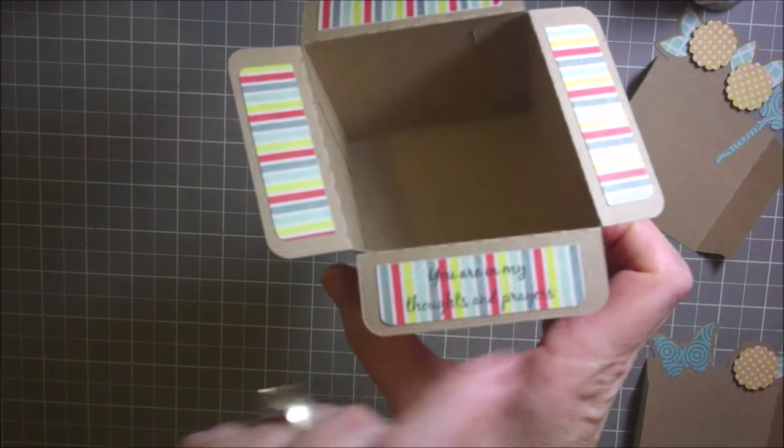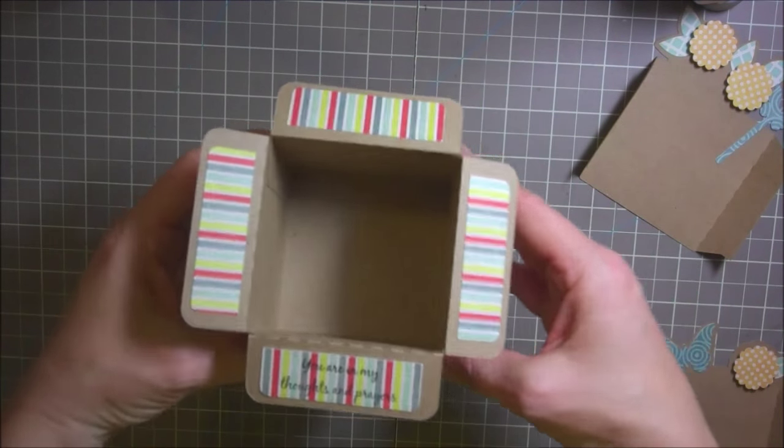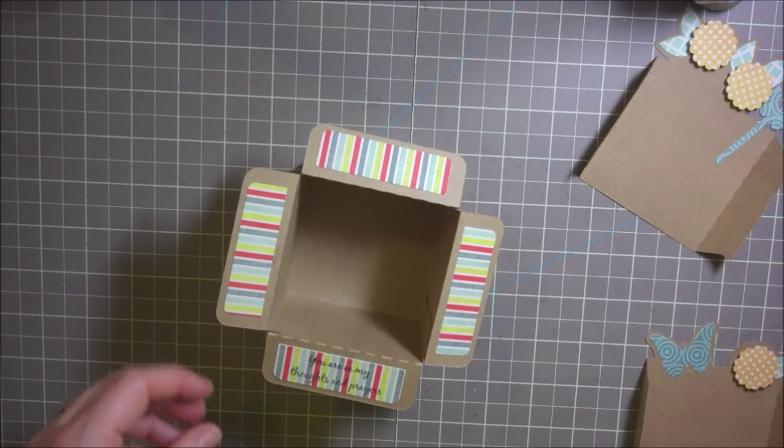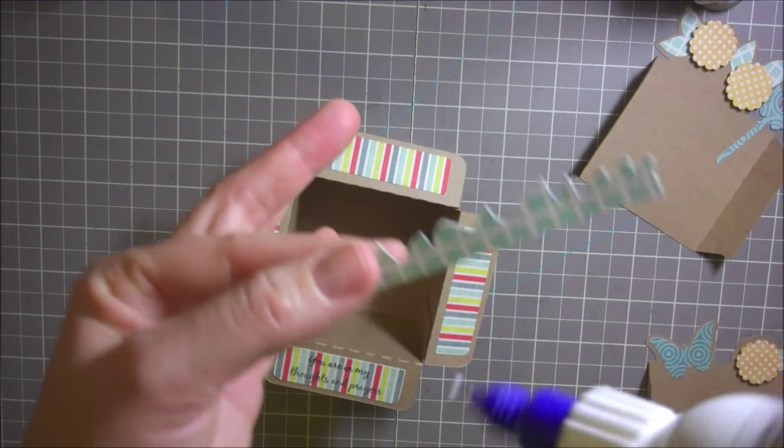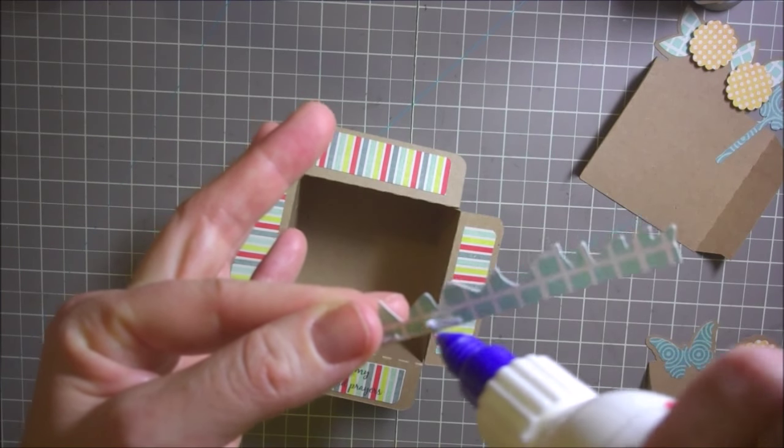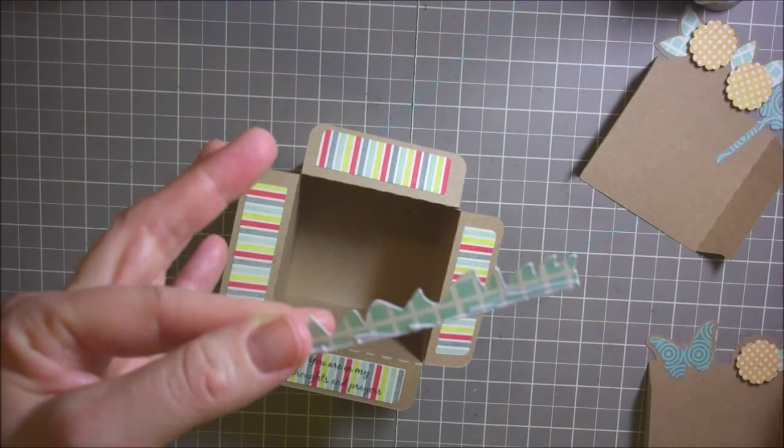I have all four sides glued and this one says you are in my thoughts and prayer, so this is gonna be the front of my box. In the very very front is this little piece of grass but I did some fun colors rather than just like regular green grass.